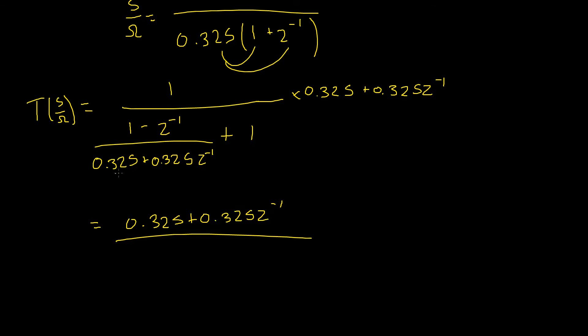Our denominator will become, this will cancel, and just leave 1 minus z to the power of negative 1 plus 1 multiplied by this whole mess here, which will simply give us 0.325 plus 0.325 z to the power of negative 1.